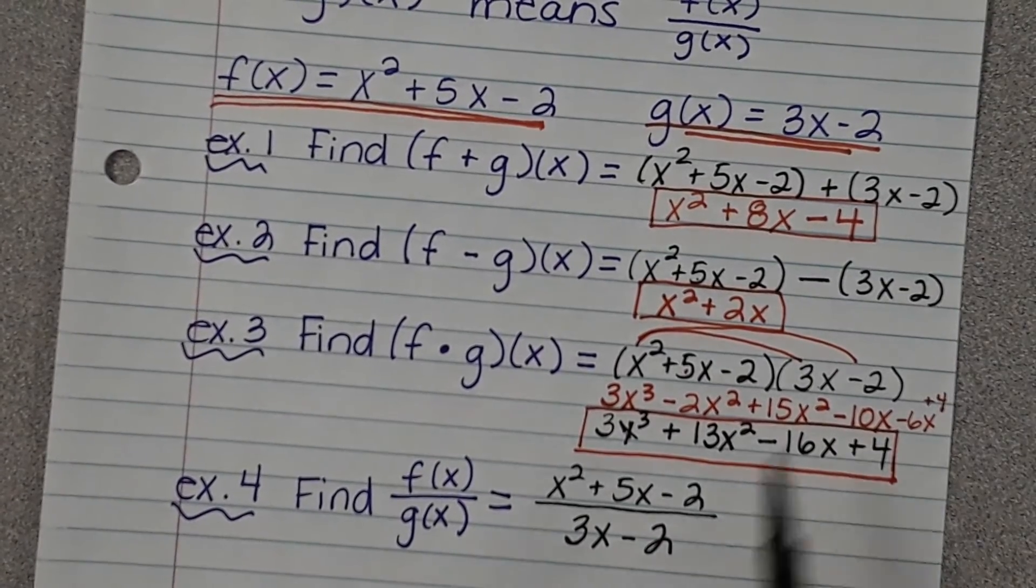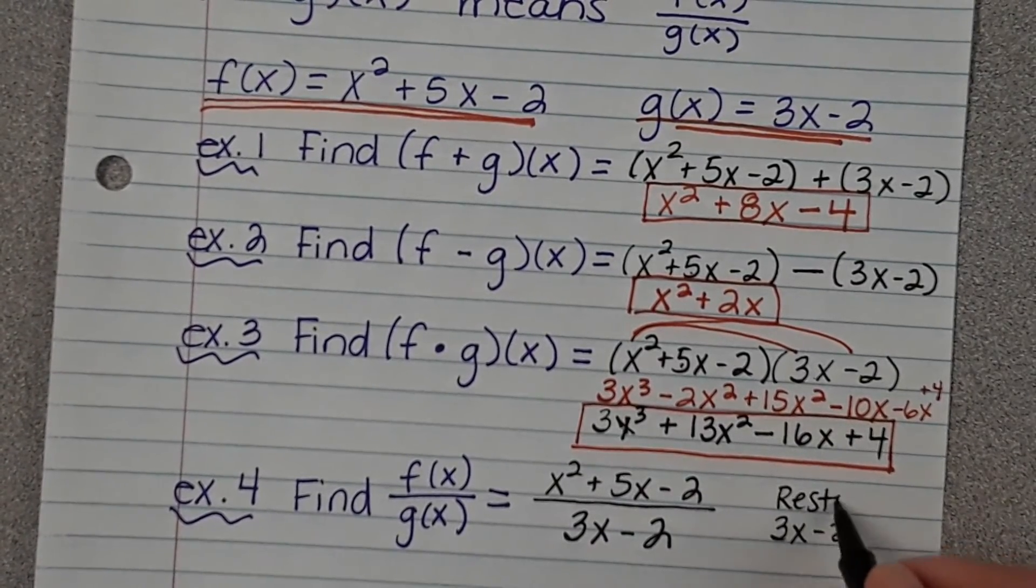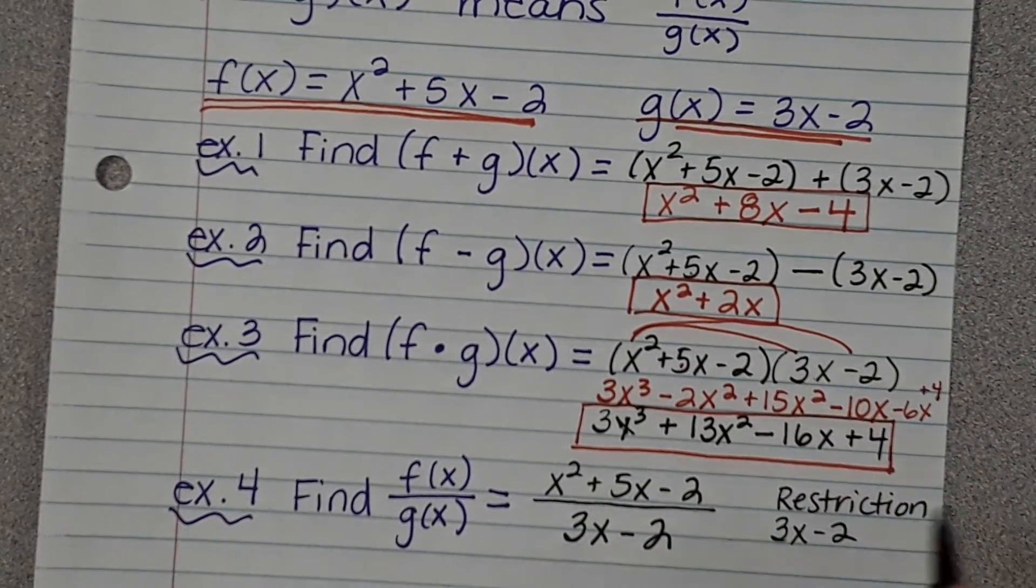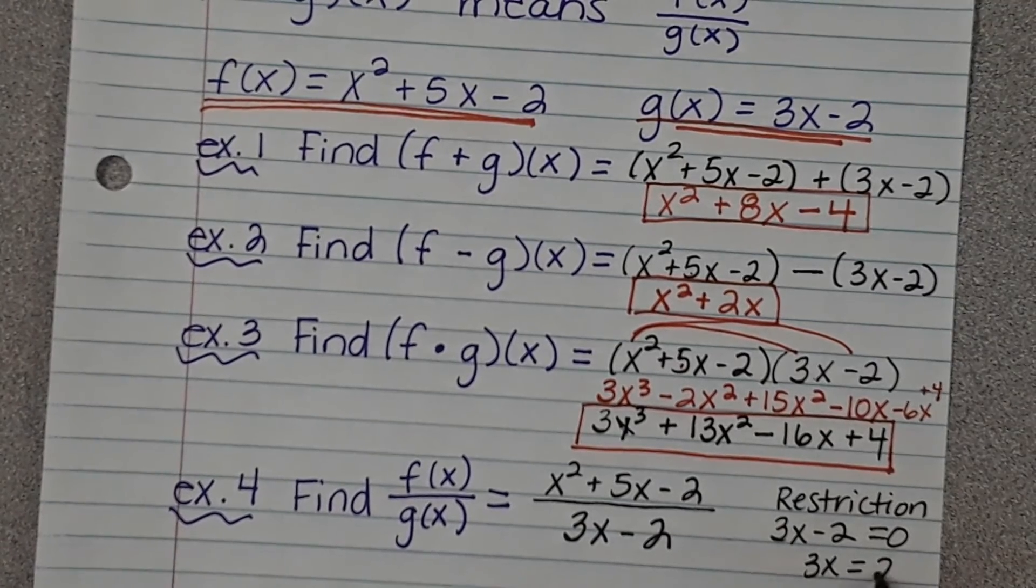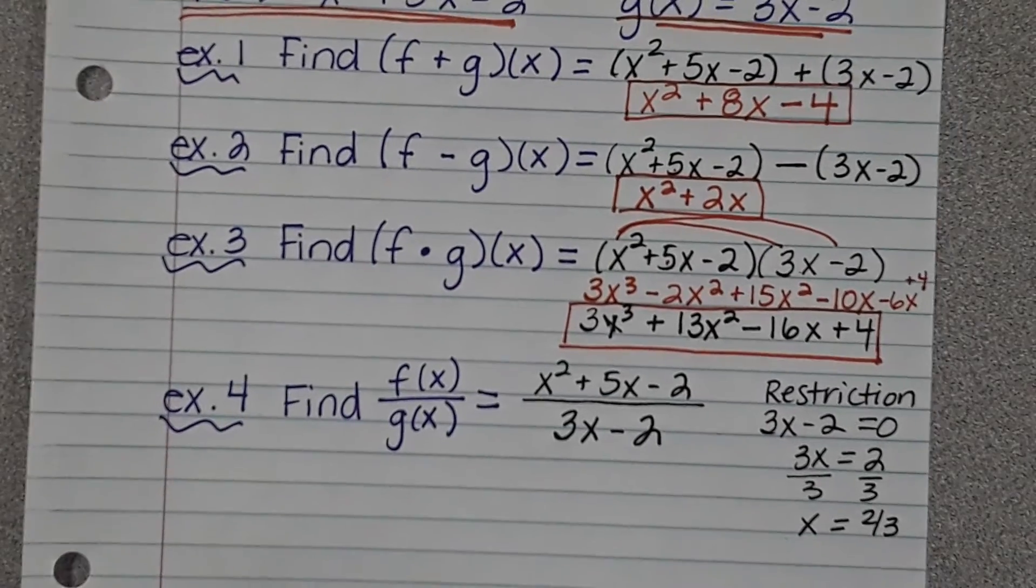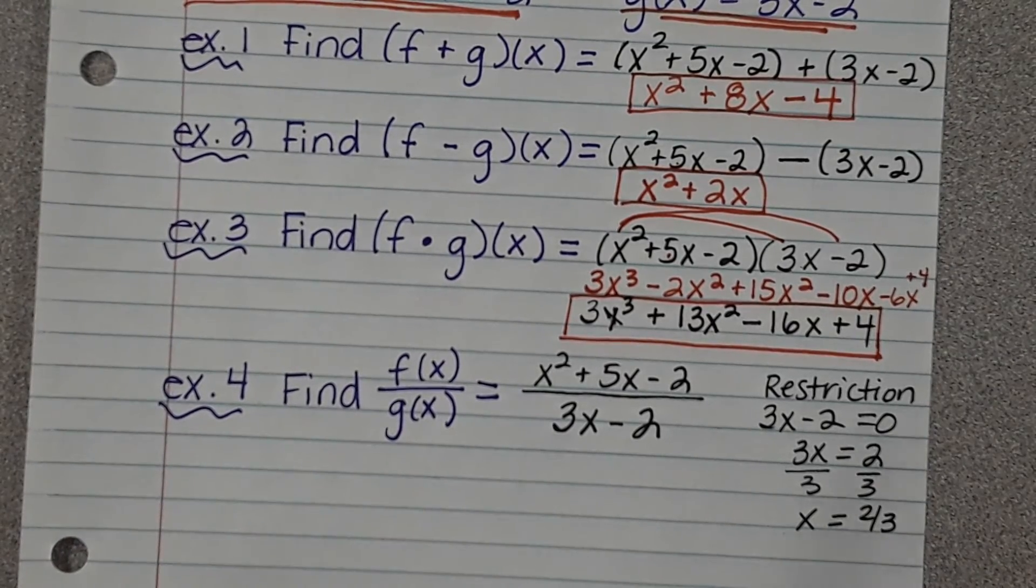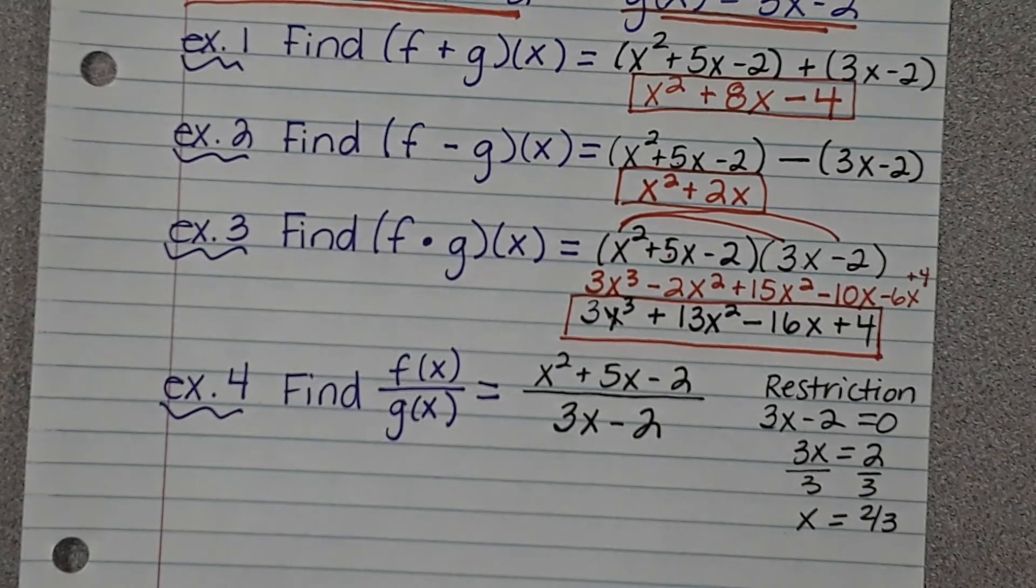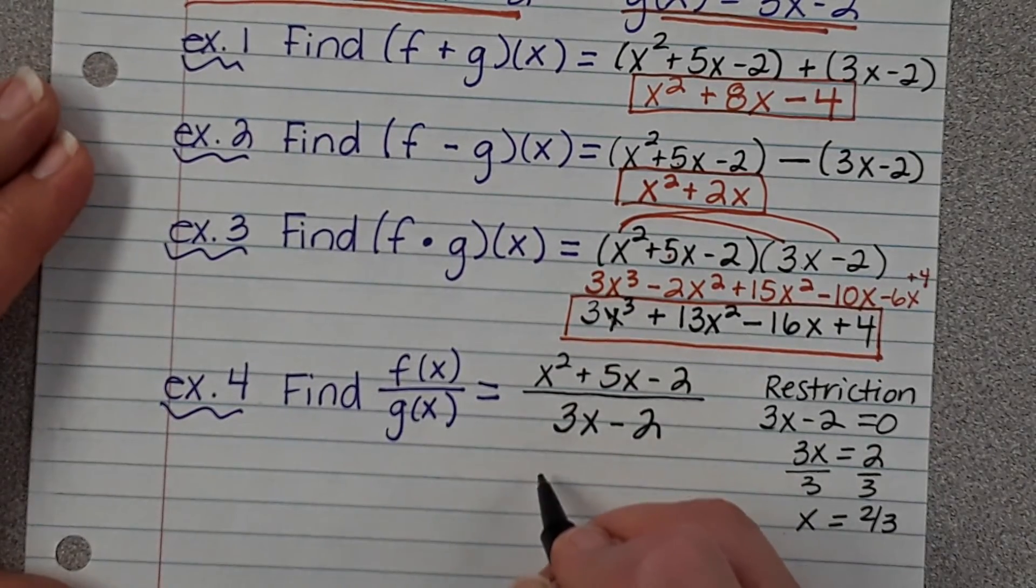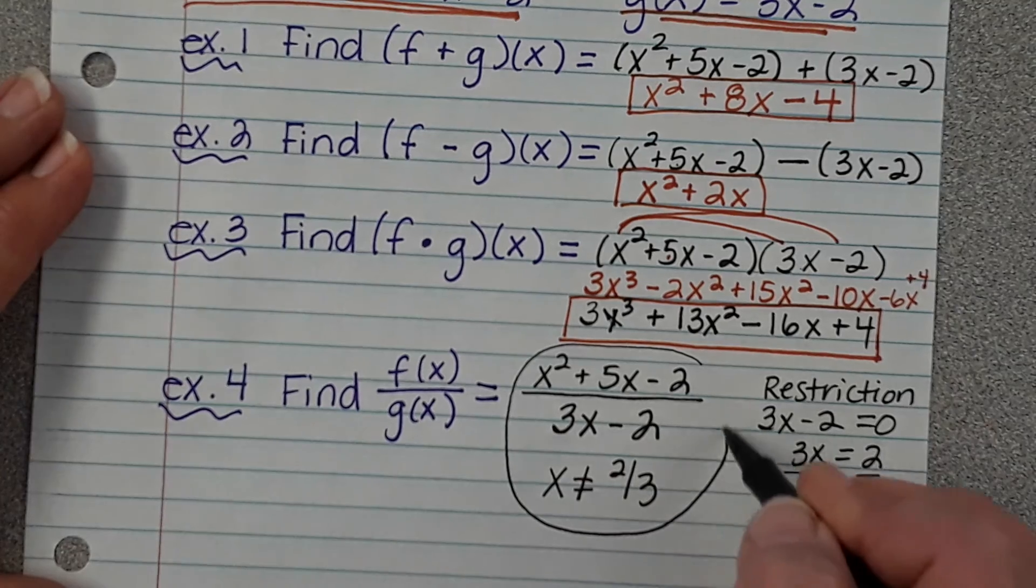So a restriction is because the denominator of any fraction can't equal 0. So I'm going to find my restriction by taking the denominator and setting it equal to 0. When I get a restriction, when I get this x, what it's saying is x can be anything except this number. If x is this number, then this function would be undefined, and we can't have an undefined variable. So what we say is our restriction or our limitation is x cannot equal 2/3. So this whole thing is actually your answer.